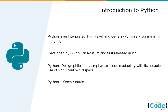Python was first developed by a Dutch programmer by the name of Guido van Rossum, and Python was first released in the year 1991. The design philosophy behind Python was to create a language that was much easier to read and much easier to code in, compared to the languages that were prevalent back in those days, such as the language C.